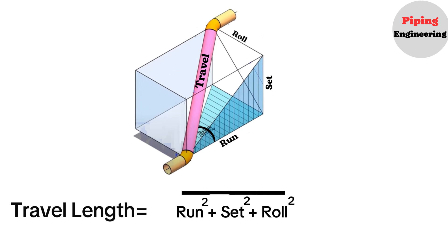This method is applicable when the pipeline displacement forms a right-angle parallelogram as shown in the video. In this type of double-rolling pipeline, isometric drawings typically provide the lengths of the run, set, and roll. These measurements help in calculating the overall travel length and determining the exact positioning of the pipeline within the three-dimensional space.